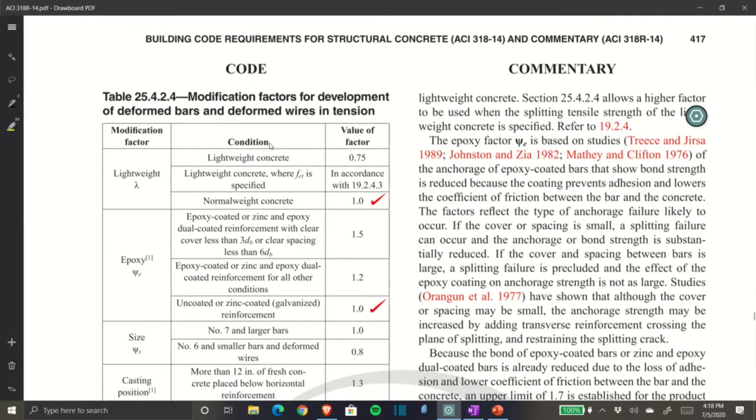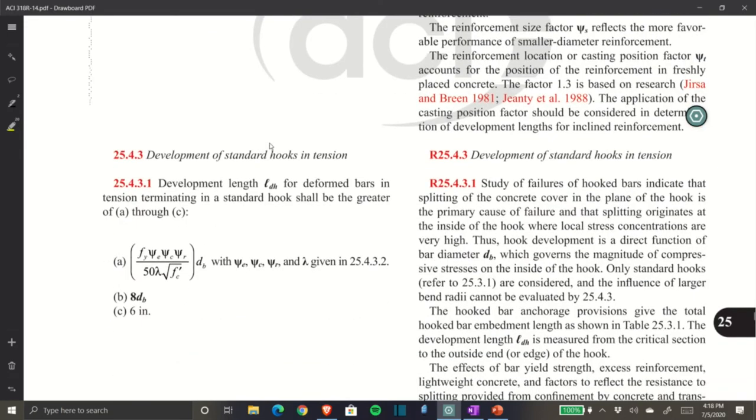Number 2. So number 2 is on page 417, same place as where the previous table we were just using. If you scroll down just a bit, you see section 25.4.3. For development length of hooks, that's denoted as LDH. You have three options, A, B, and C. A is an equation similar to previous. B is 8 times diameter of bar. And C is just straight up 6 inches.